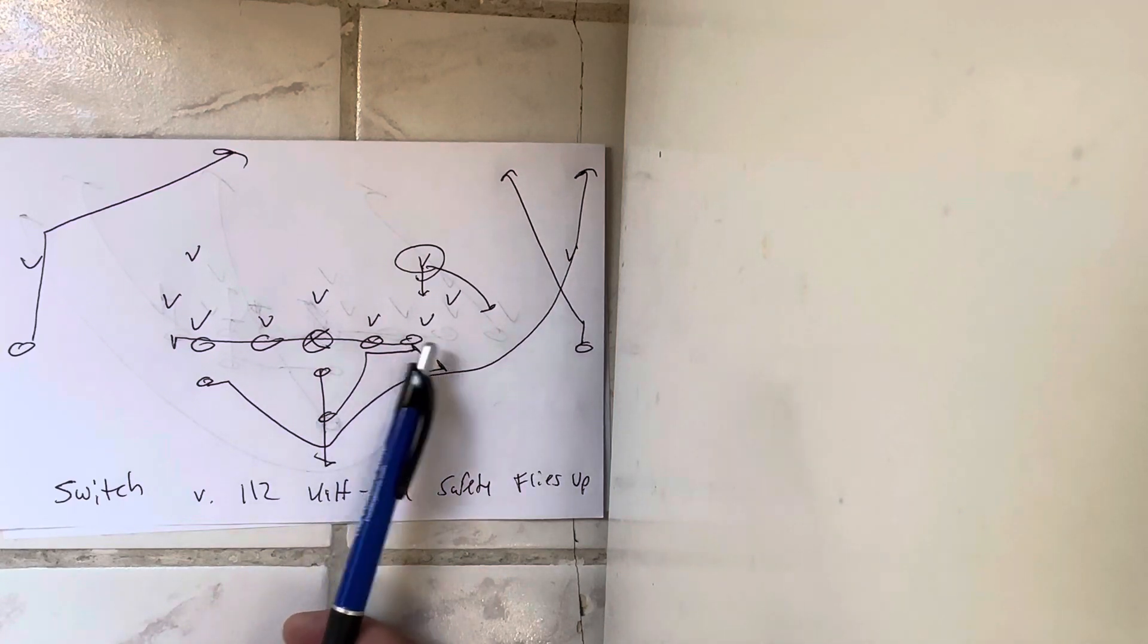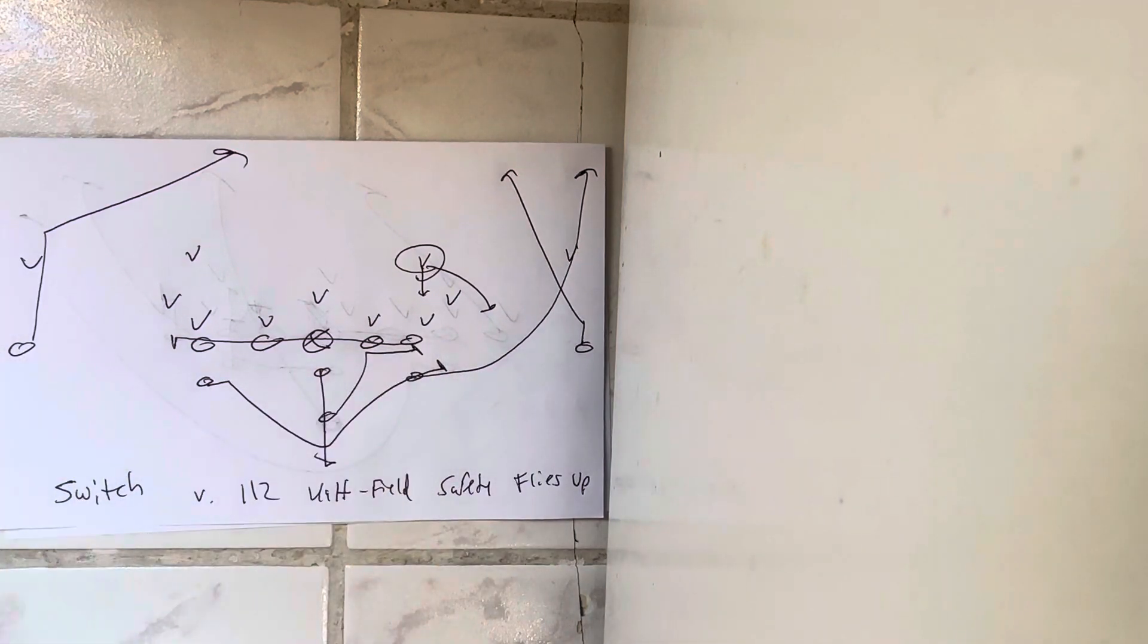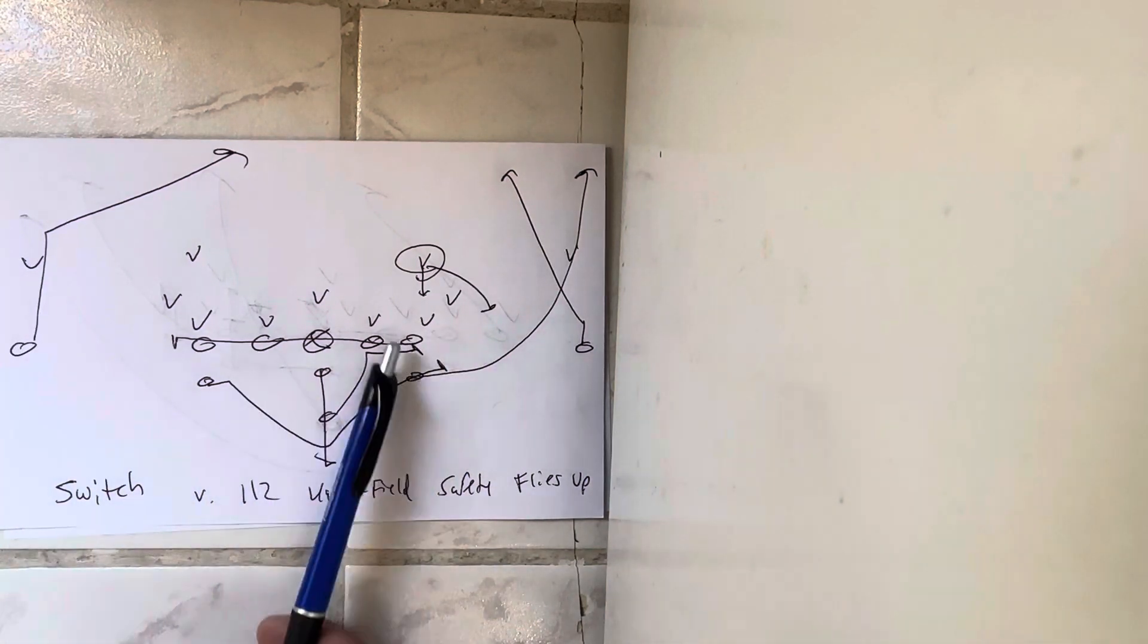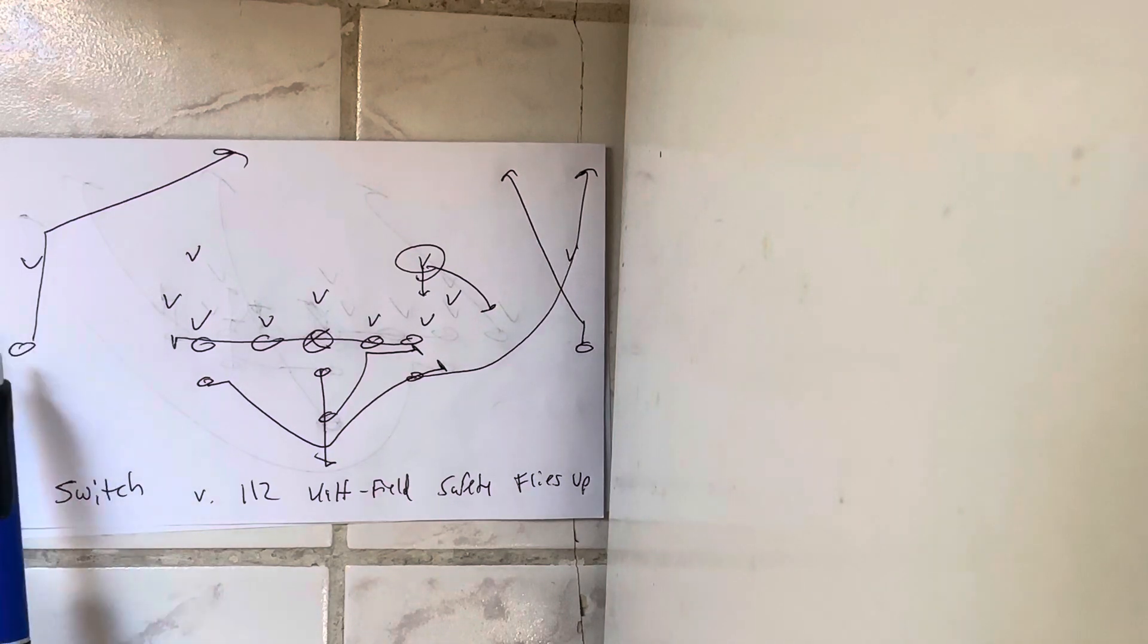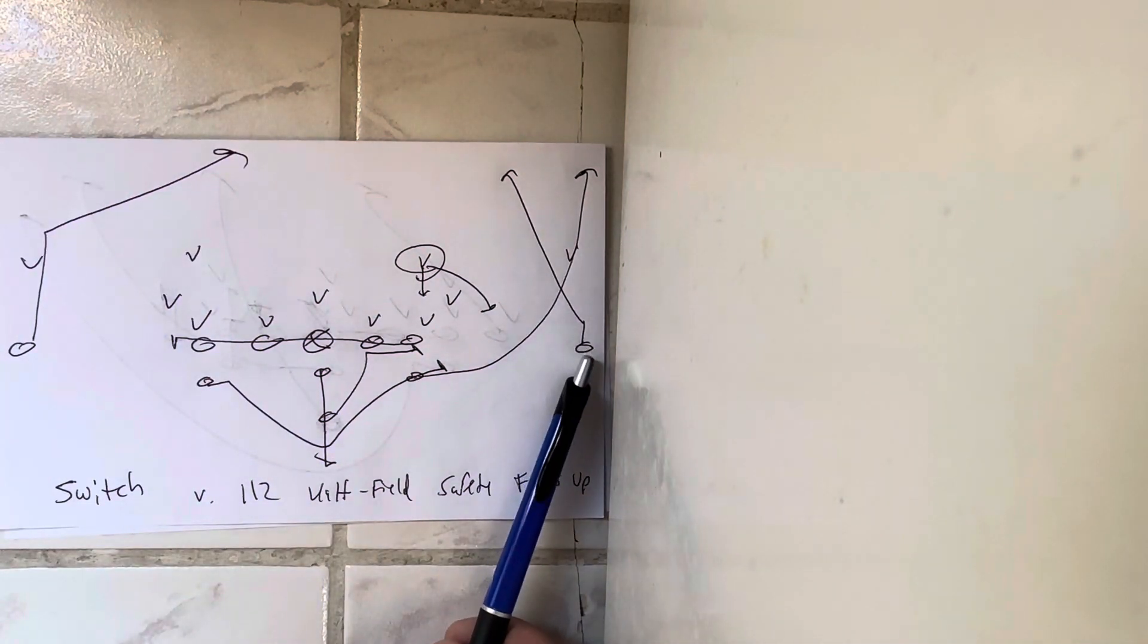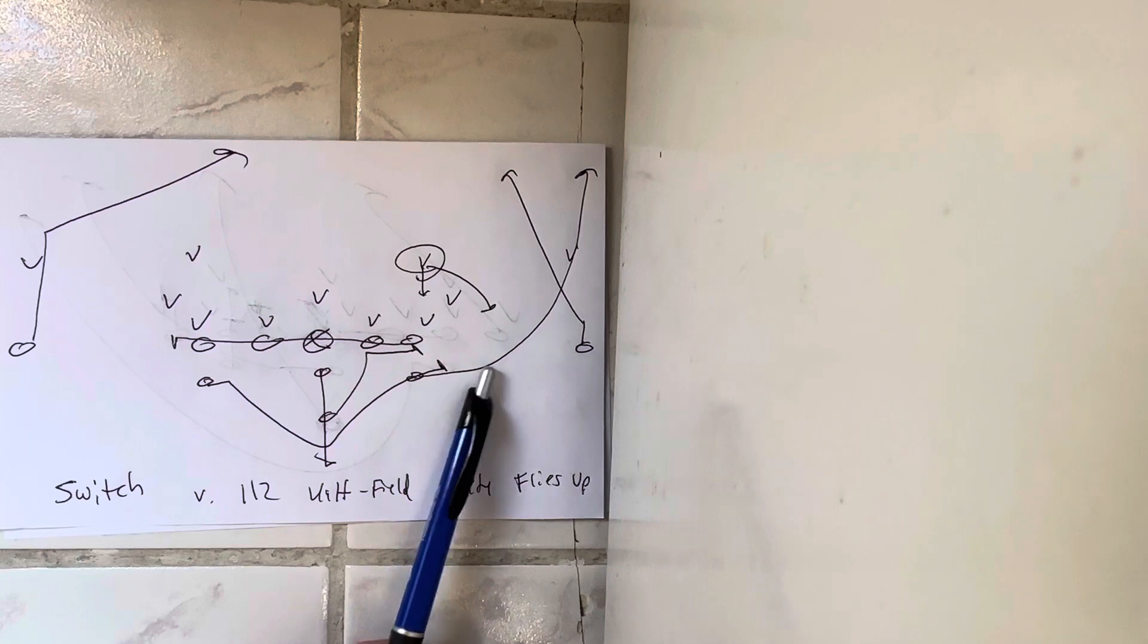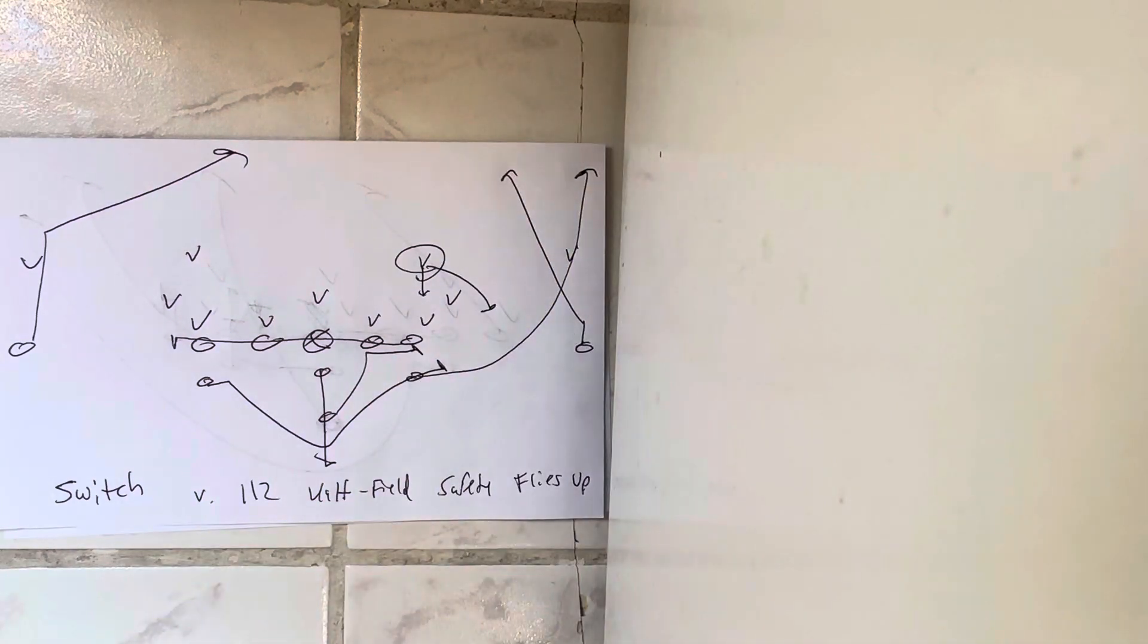So if it's switch to the right, you'll have turn back protection to the left, where the B back and backside A back have the B and C gap, so you have seven in protection. You get a backside post. Receiver takes three steps up the field then breaks it 15 degrees on the skinny. The A back takes three flat steps at 45 degrees and wheels up the numbers.